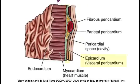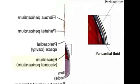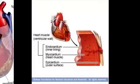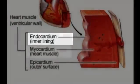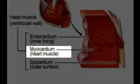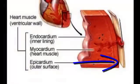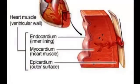The epicardium is the outermost layer of the heart, and it forms part of the pericardium — peri meaning around. So you have an inner layer of endocardium, a thick muscle layer of myocardium, and then the epicardium is the outer layer of the heart.